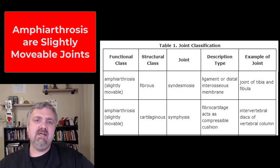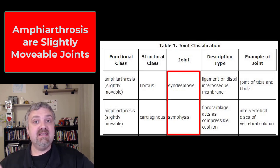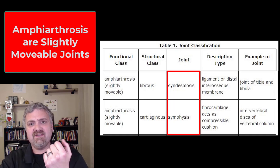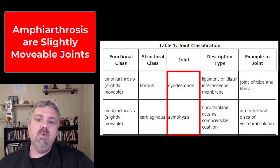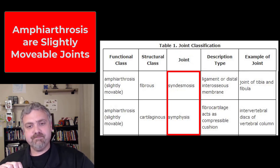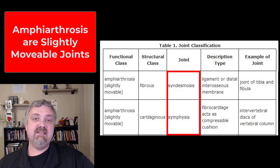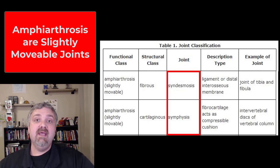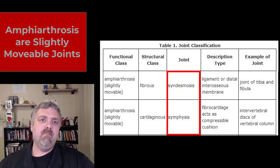Then we have the amphiarthrosis, which means slightly movable. The examples include a syndesmosis — that's the joint between your radius and ulna, and also the tibia and fibula. The joint between your radius and ulna allows for quite a bit of movement as you move your forearm, while the tibia and fibula have less mobility. And then the symphysis: that's an amphiarthrosis at the intervertebral discs between your spinal vertebrae and also at the symphysis pubis between your two pubic bones.